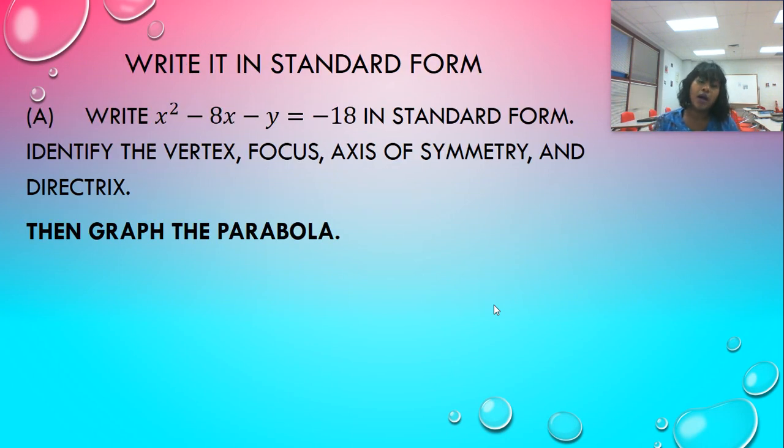So if I'm given x squared minus 8x minus y equals negative 18, and they tell me to write it in standard form, then I need to know information about, and then it wants us to graph it. So in order to graph it, I need to know the vertex, the focus, axis of symmetry, directrix, and any other characteristics I might need, like the p-value being positive or negative.